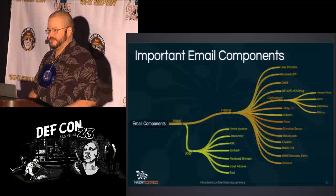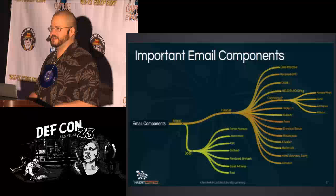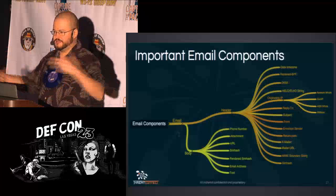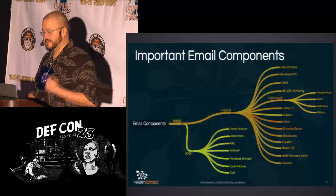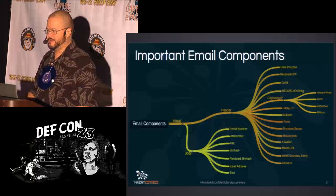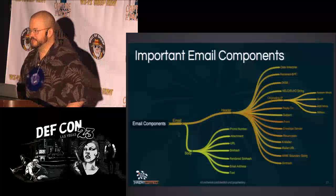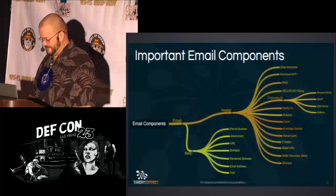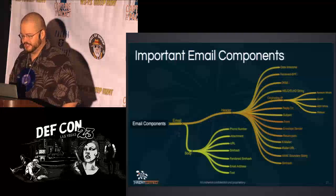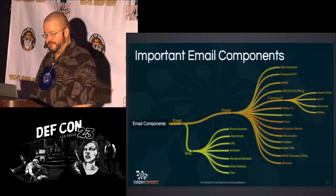Reply-to is an important one. For 419 or advance fee fraud, the adversary needs to collect replies to their scam, so the reply-to address is typically not forged — as long as it still exists and hasn't been taken down, some slimeball is actually reading email that comes into it. Subject is obviously a valuable indicator. The from address is typically and very easily forged, and could say almost anything — it might even be different from the reply-to.